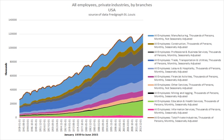Employee benefits are various non-wage compensation provided to employees in addition to their wages or salaries. The benefits can include housing, group insurance, disability income protection, retirement benefits, daycare, tuition reimbursement, sick leave, vacation, social security, profit sharing, funding of education, and other specialized benefits. In some cases, such as with workers employed in remote or isolated regions, the benefits may include meals. Employee benefits can improve the relationship between employee and employer and lower staff turnover.